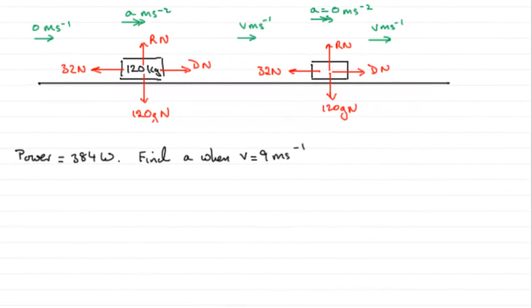Okay, so for this part of the question, we know that the power is 384 watts and we've got to find the acceleration A when V equals 9 meters per second. So that's going to be over this stretch here, this first stretch before it reaches its constant velocity V.